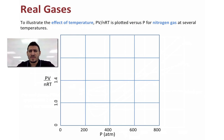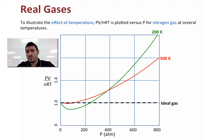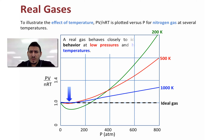Now if we take nitrogen and do the same plot but change the temperature: starting at 200 Kelvin this is how the curve looks. When we heat the gas to 500 Kelvin it's getting closer to the ideal gas curve but still far away from being ideal. Heating more, the curve gets closer, especially in the low pressure region. So a real gas behaves closely to ideal behavior at low pressure and high temperature.